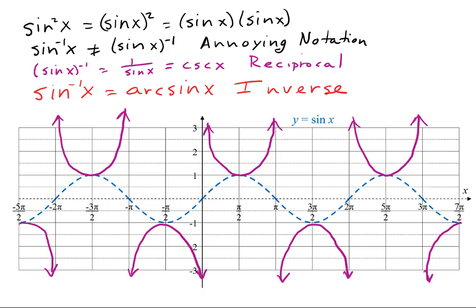To find the inverse sine function, we first have to select a portion of the sine function that is one-to-one, shown here in blue, and then we reverse the order of x and y to get the inverse sine function shown in red.